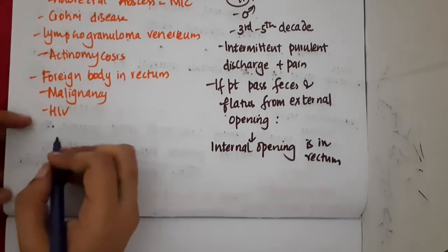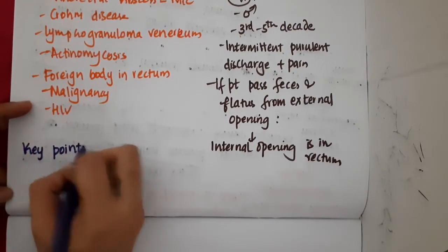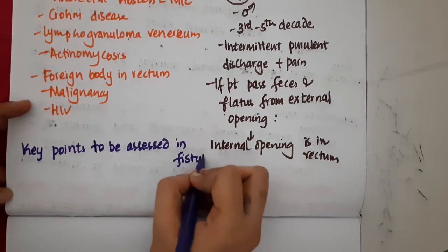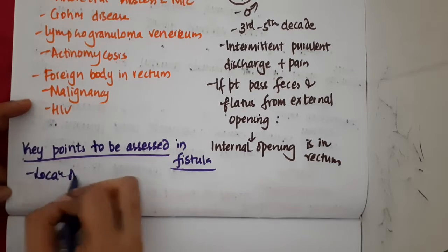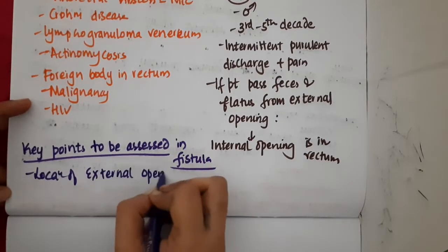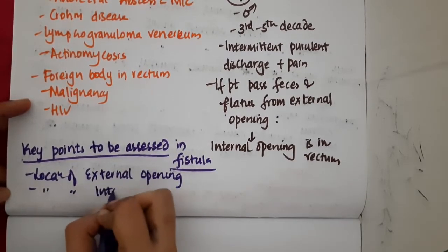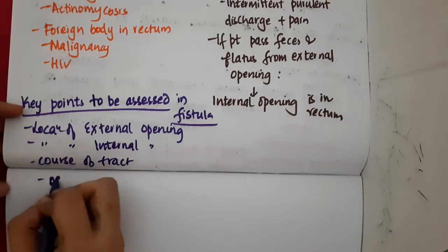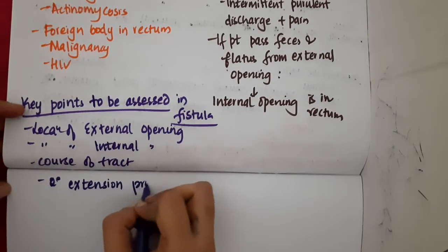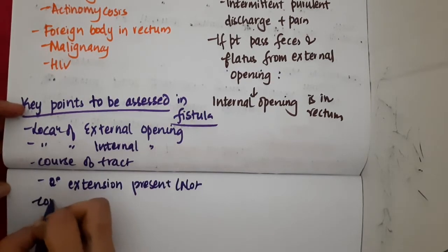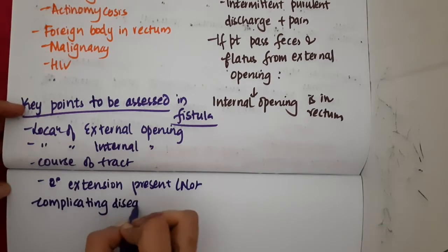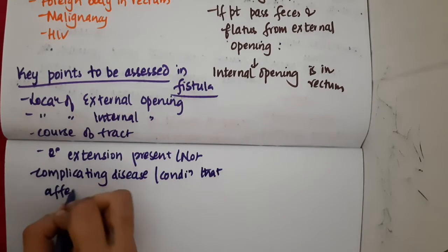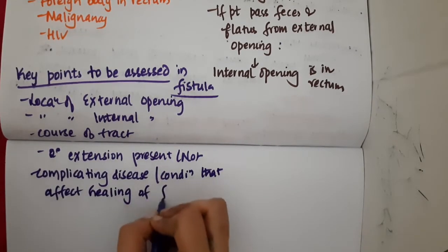The key points to be assessed in fistula include: the location of the external opening, the location of the internal opening, the course of the tract, whether secondary extensions are present, and any complicating diseases or conditions associated with the fistula that would affect healing.